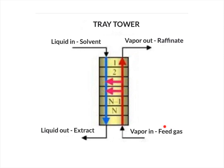The feed gas consists of solute, and this is the feed gas that we want to treat. The majority of the solute in the feed gas will be soluble in the solvent and collected at the extract stream, while the rest — a very minimum amount of solute — will be released at the raffinate.